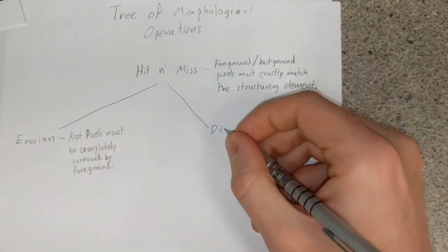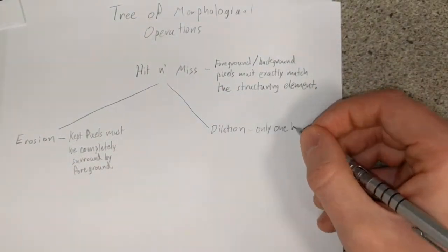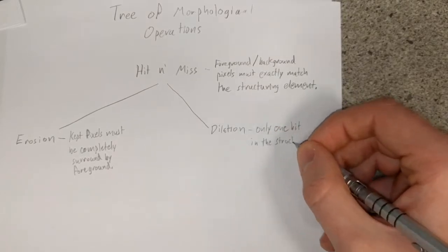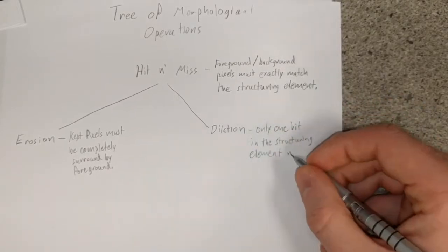Dilation, the dual or conjugate of erosion, adds a pixel to the foreground as long as there is at least one neighboring foreground pixel.